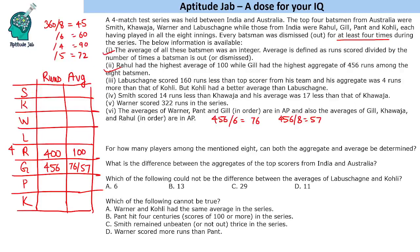Labuschen scored 160 less than the top scorer — we don't know the top scorer yet, so we'll return to this. Smith scored 14 runs less than Khwaja — nothing known about Khwaja yet. Warner scored 322 runs. Analyzing 322: divided by 2 gives 161, which is 7 × 23, both prime. So the only valid dismissal count is 7 times, giving Warner an average of 46.